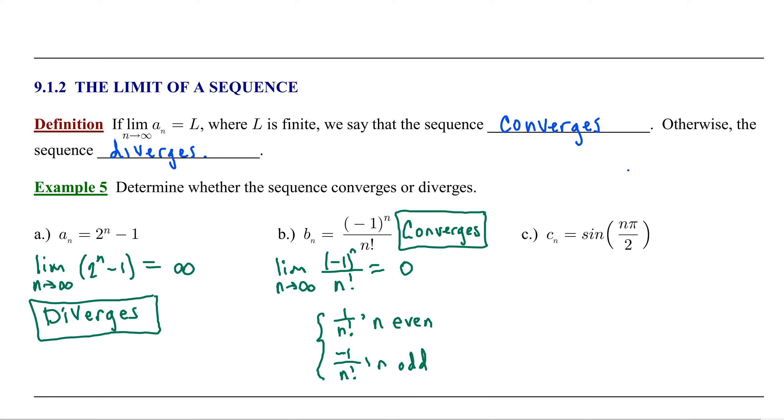The next sequence we'll consider is c sub n equal to sine of n pi over 2. Now in all of these cases, we're assuming that n begins at 1 and then continues to infinity. To determine if this sequence converges, we need to know the limit as n approaches infinity of sine of n pi over 2. We can tell that the argument here is approaching infinity as n approaches infinity, but the values of sine are cyclical as we work our way around the unit circle.